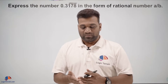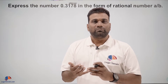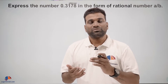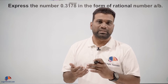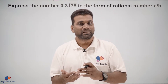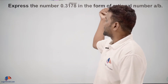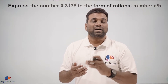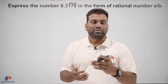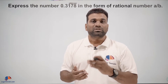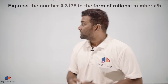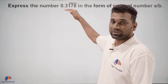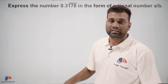We know that numbers which are terminating we can convert into rational number form, that is a upon b. Numbers which are non-terminating but repeating can also be converted into rational numbers. But numbers which are non-terminating and non-repeating we cannot write in the form of p upon q, because those are called irrational numbers. So here we have given a rational number only, and we need to convert it into a upon b form.